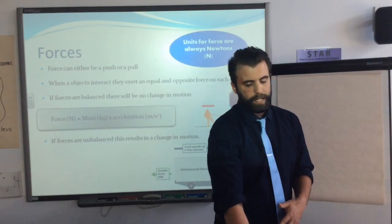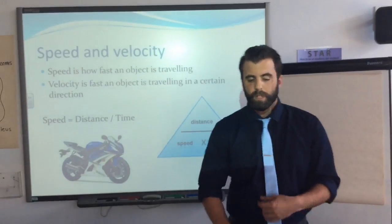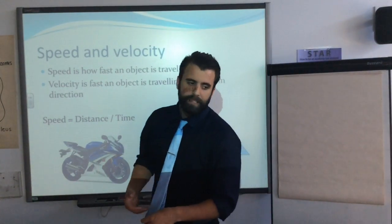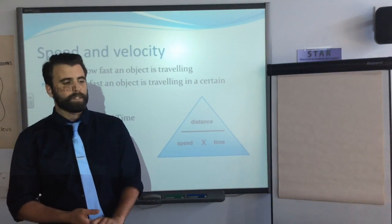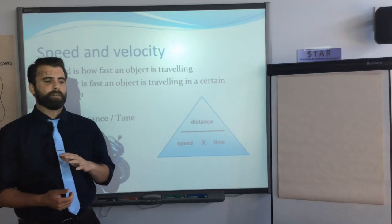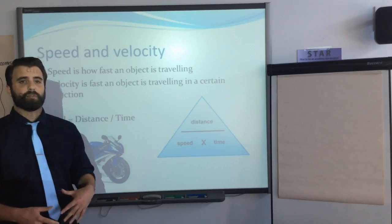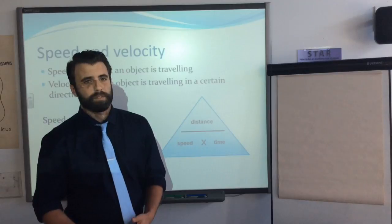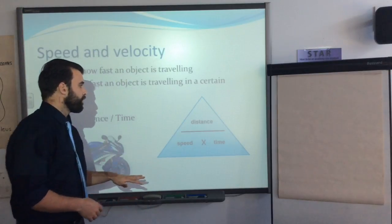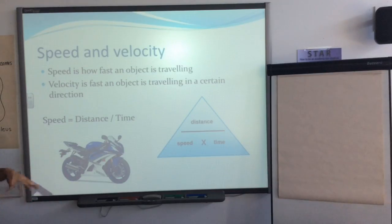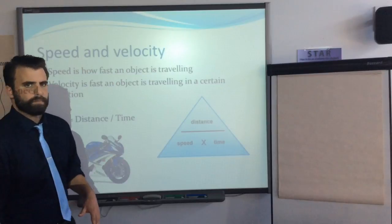Speed is how fast an object is traveling, and velocity is how fast an object is traveling in a certain direction — velocity is just speed with a direction. The equation you're going to use is speed equals distance over time. This one won't be given, so you need to know it.